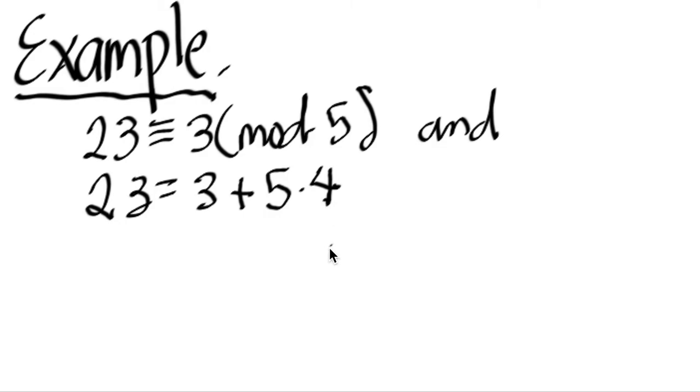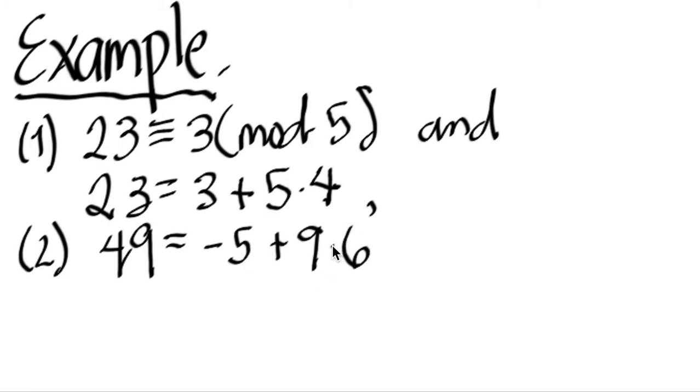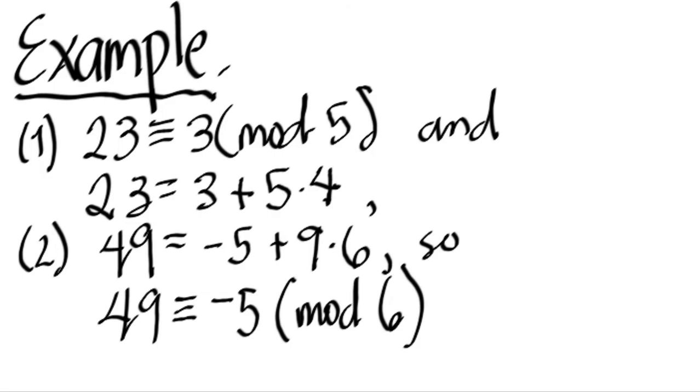As another example, let's have 49 is equal to negative 5 plus 9 times 6. So therefore, we can restate this as 49 is congruent to negative 5 mod 6, or you can write mod 9.